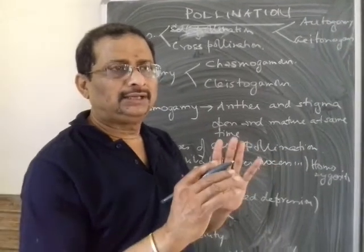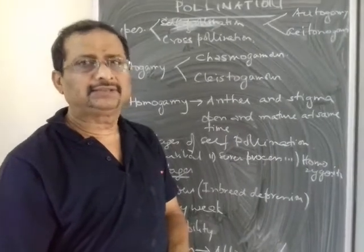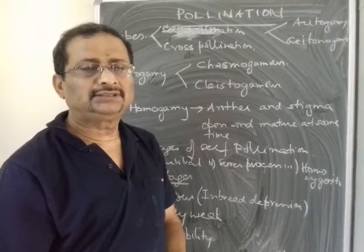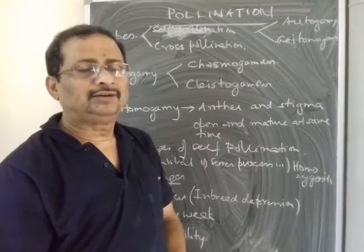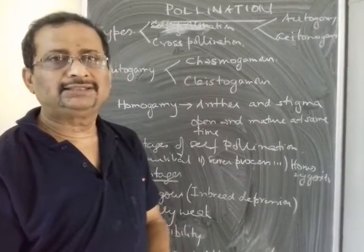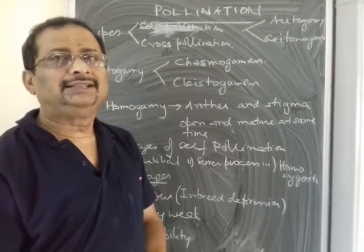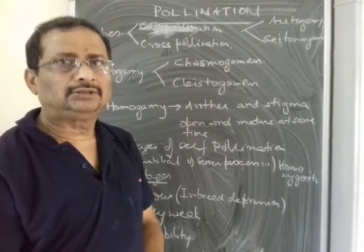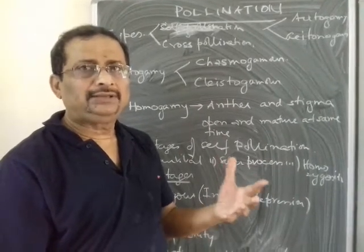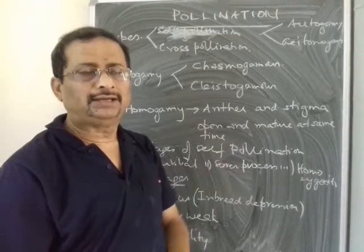There are two types of pollination: self-pollination and cross-pollination. Self-pollination is when the pollen grain is transferred from the anther of one flower to the stigma of the same flower on the same plant, or to the stigma of another flower on the same plant.